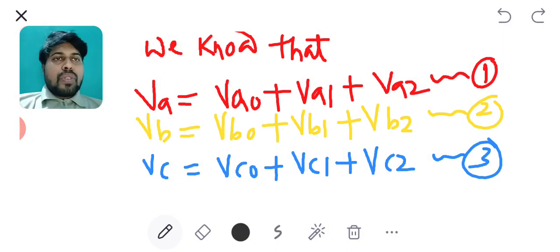To find these expressions, we know that VA is the sum of 0 sequence voltage of phase A, positive sequence voltage of phase A, negative sequence voltage of phase A. VB is the sum of 0 sequence voltage of phase B, positive sequence voltage of phase B, negative sequence voltage of phase B.